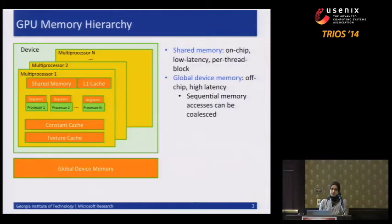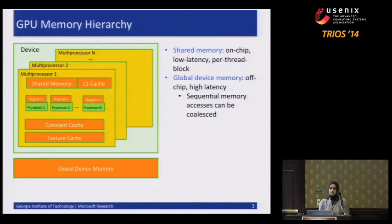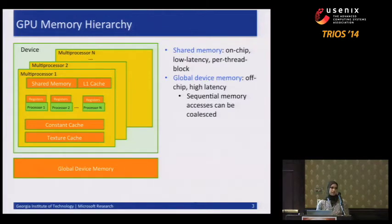I want to say something about the GPU memory hierarchy as well, because the GPU does have a tiered hierarchy of memory. The two types I want to point out are shared memory and global memory. This work was done for discrete GPUs where global memory is actually off-chip, but shared memory is on-chip, so it has much lower latency. It's shared by all threads within a thread block.